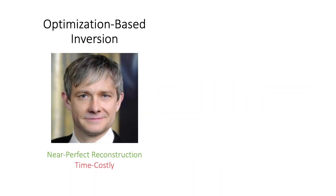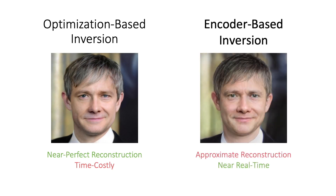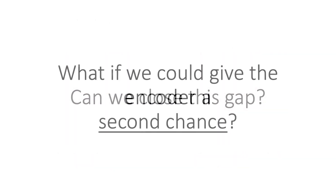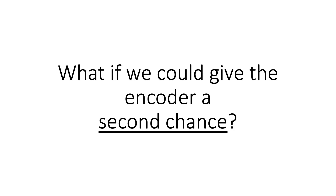So on one end of the spectrum, we have optimization techniques that provide near-perfect reconstruction but take several minutes per image. And on the other end, we have encoders which operate in a fraction of a second but provide only an approximate latent representation of our input. But what if we could try closing this gap? What if we could give the encoder a second chance at inverting the image?